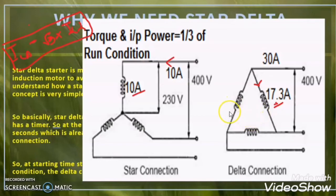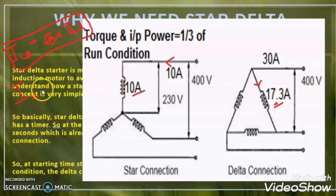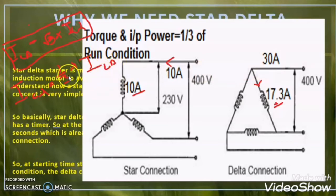The second thing to observe is that the line current and the coil current in the star connection are equal. And the coil current or line current of the star configuration is one third of the line current of the delta configuration. So the coil current in star configuration is one third of the line current in delta configuration. When we put this value in, we get 10A. These two relations are very important to understand the star delta starter.